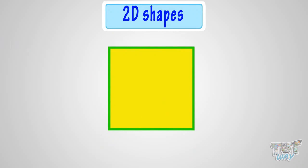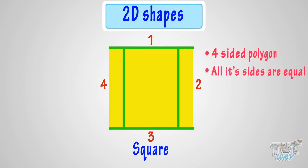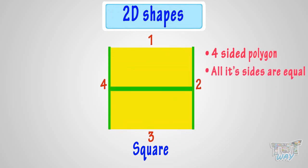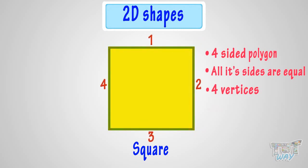This is a four-sided shape called a square, also a four-sided polygon. All its sides are equal. It has four vertices and four edges. Think of things that are square in shape.